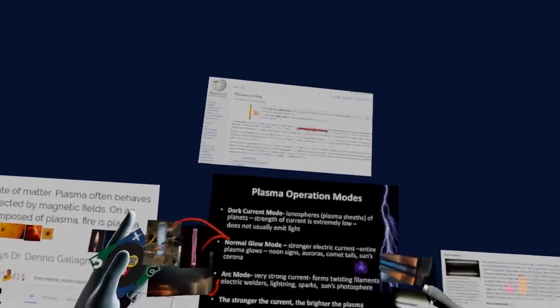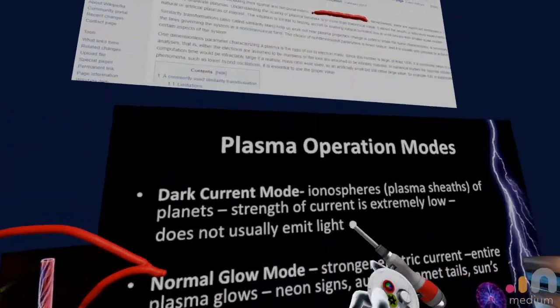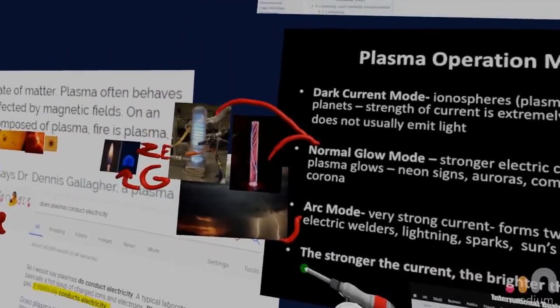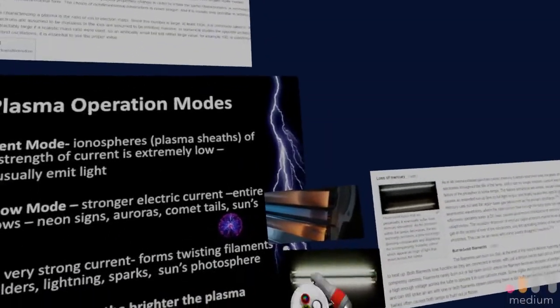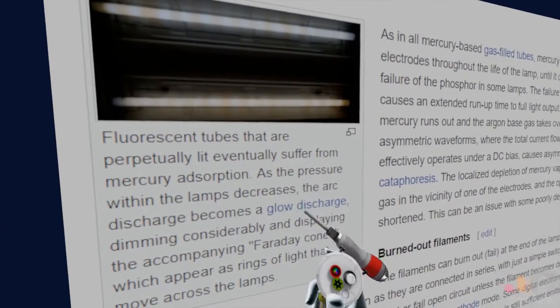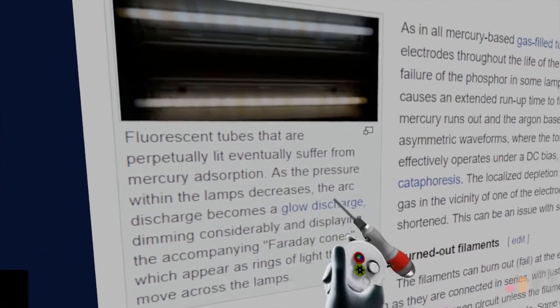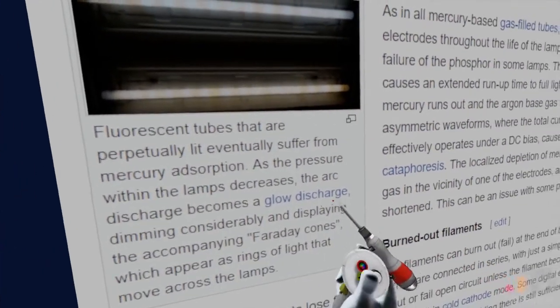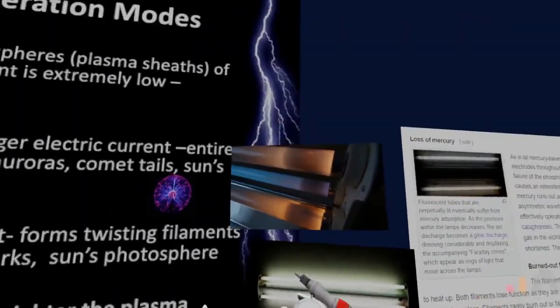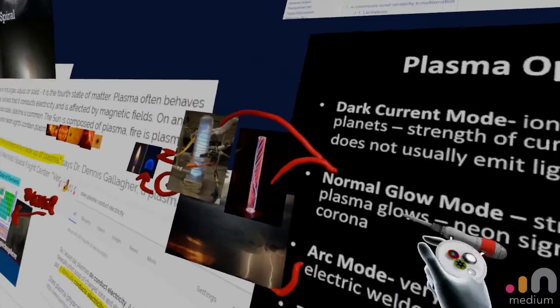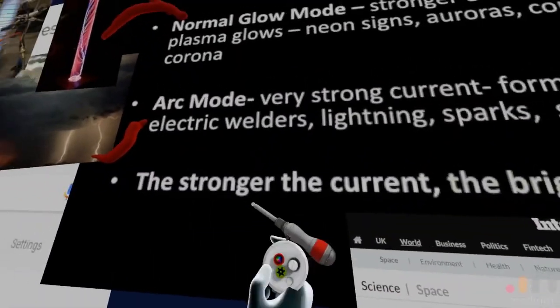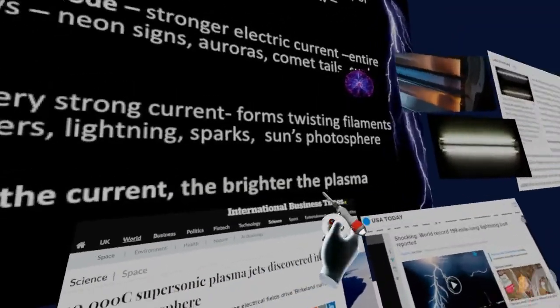Well plasma has multiple ways that it can look. It has a dark current mode such as the ionosphere, it has a normal glow mode, and then arc mode. So the normal glow mode can be seen in burnt out fluorescent bulbs. When the pressure within the lamps decreases, the arc discharge becomes a glow discharge. So the arc, which is the strongest mode, becomes a normal glow discharge. These are known things that happen inside of plasma. And the last thing about plasma is that the stronger the current, the brighter the plasma.